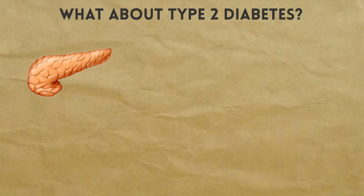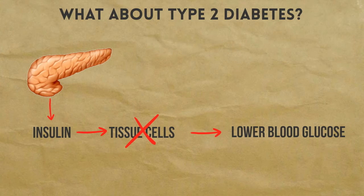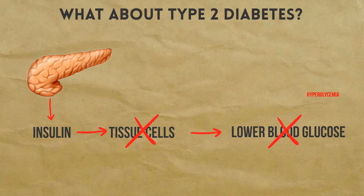Now that we understand the role of insulin, we can understand what happens when insulin is not being used properly, as in the case of type 2 diabetes. In type 2 diabetes, the body's cells become resistant to the effects of insulin. As a result, the body can't remove the extra glucose in the blood as efficiently, resulting in a condition called hyperglycemia.